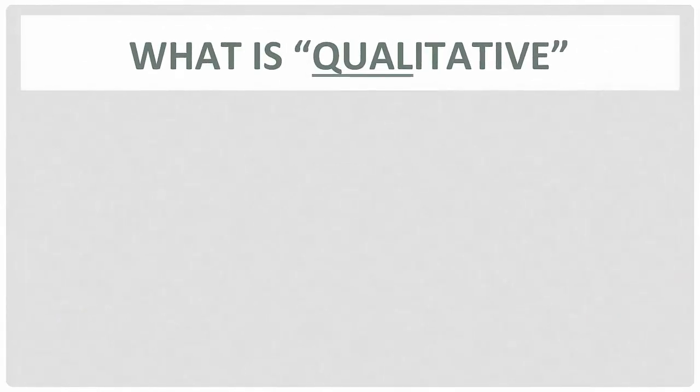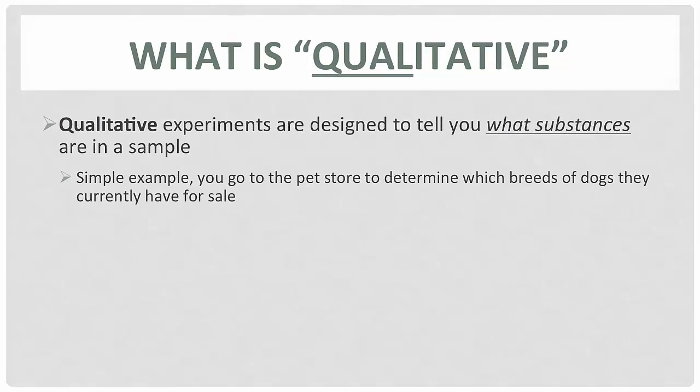The 'qual' means qualitative. Qualitative experiments are designed to tell you what substances are in your sample. So for example, if you go to the pet store and found out what kind of dogs they have there, what breeds they have, that would be a qualitative assessment.